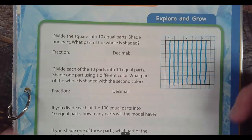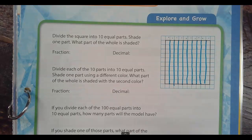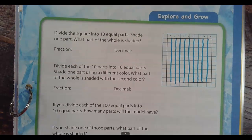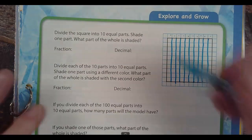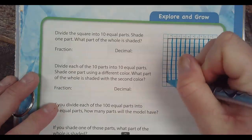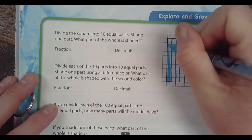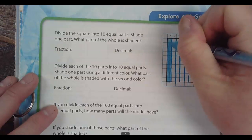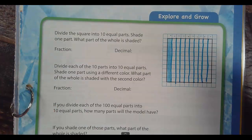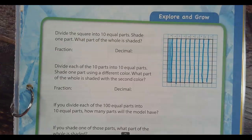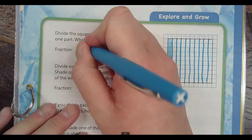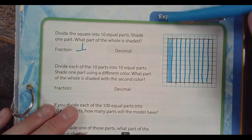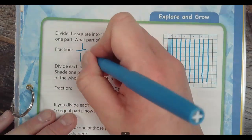Now it says we're going to shade in one part. So I'm going to take a colored pencil and shade in one piece of my ten pieces. So it says what part is shaded? I shaded in one part out of ten pieces. One out of ten pieces.